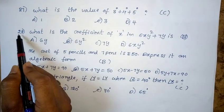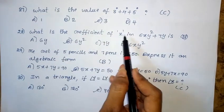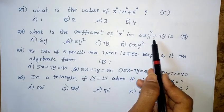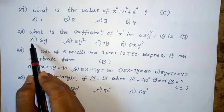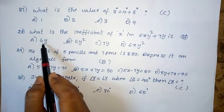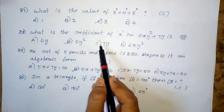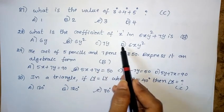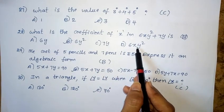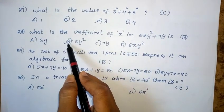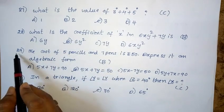Twenty-eighth question: What is the coefficient of X in 6XY squared plus 7Y? Option A: 6Y. Option B: 6Y squared. Option C: 7Y. Option D: 6XY squared. The right answer is option B — 6Y squared.